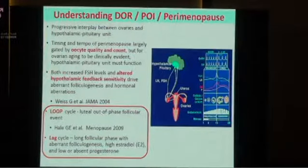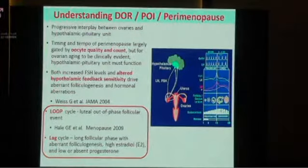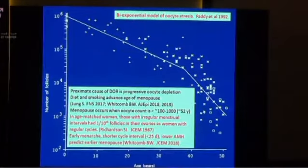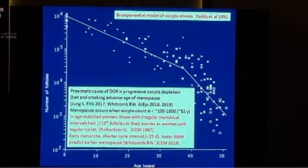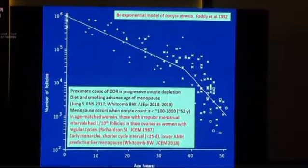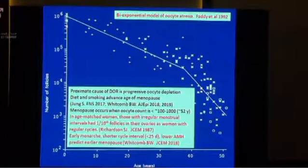And then we have the concept of lag cycles. We all know that you're born with all the follicles you're ever going to get, that they age, and that the number of follicles and the rate at which they age is variable from individual to individual. For almost 40 years, we've been able to show a huge range of follicle number. The most recent study by Whitcomb showed that early menopause, shorter menstrual cycle interval, and lower AMH predict earlier menopause.